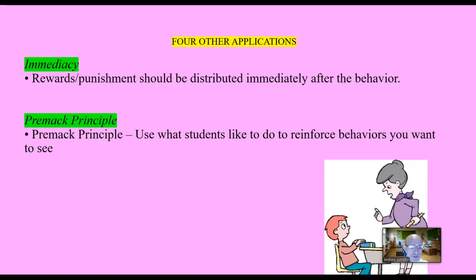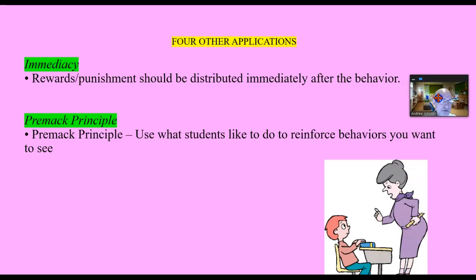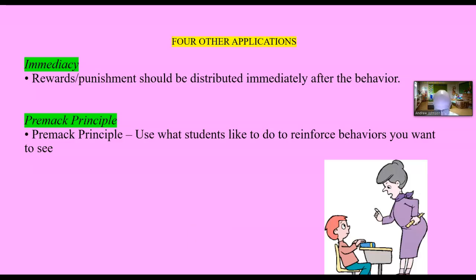Four other applications related to classical conditioning and behavioral learning theory in the classroom. The first one is immediacy — the reward or punishment you're using to change behavior should be distributed immediately after the behavior occurs. To reinforce lever pressing in a mouse in a Skinner box, the pellet needs to appear right after the mouse presses the bar. To reinforce hand raising in children, as soon as you see someone raise their hand, say 'Molly, nice job — you raised your hand.' Immediacy, as close as possible to the behavior.